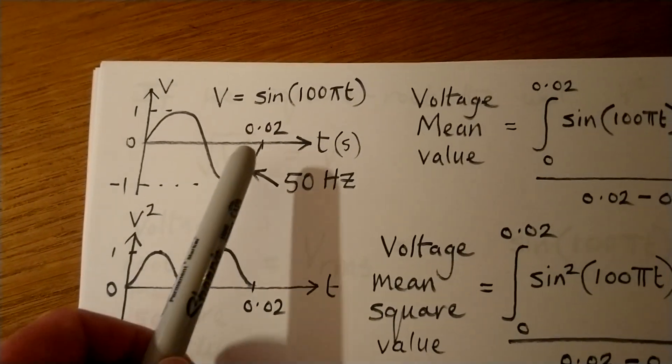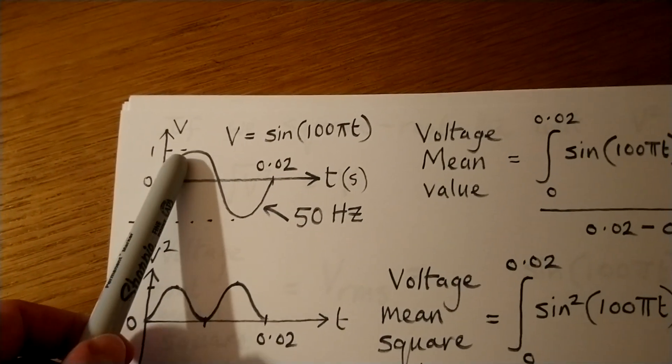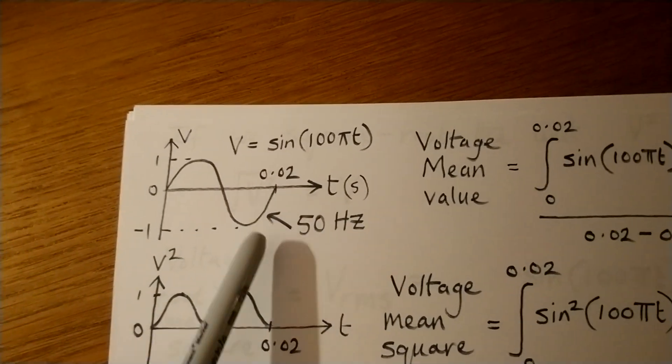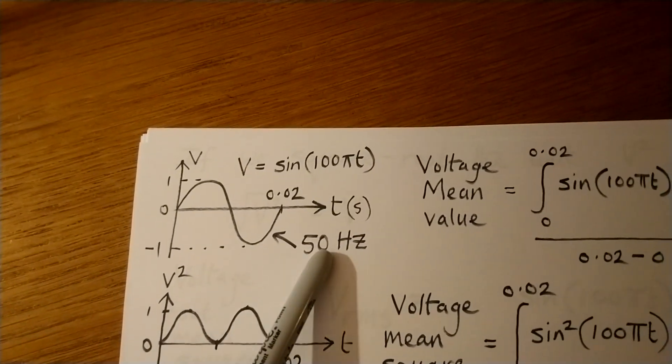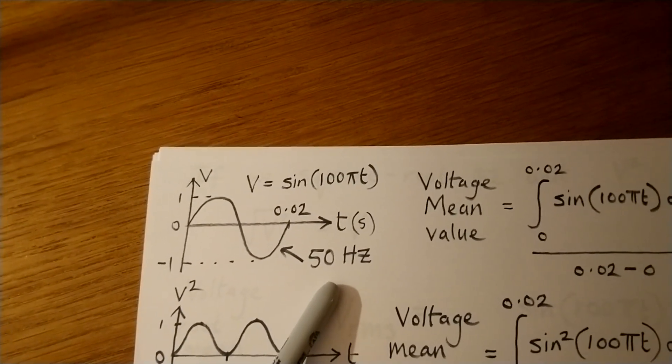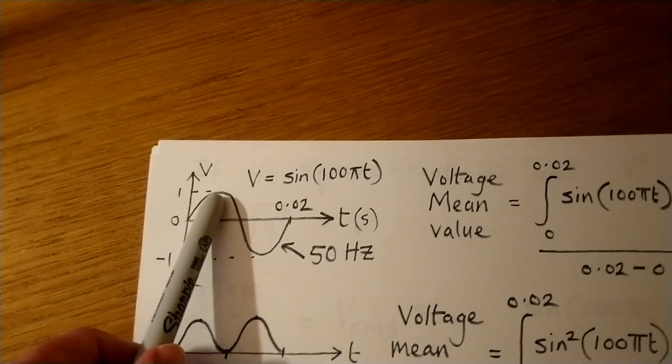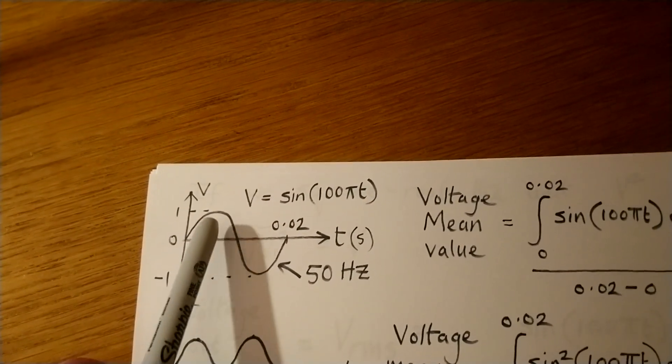So we want to work out a representative value to characterize this alternating voltage supply. I've just sketched out this graph so that it has a frequency of 50 Hz. That's the same as the mains electricity in the UK. I've set the peak value of the voltage to just be one volt, just to keep the mathematics a little bit simpler.